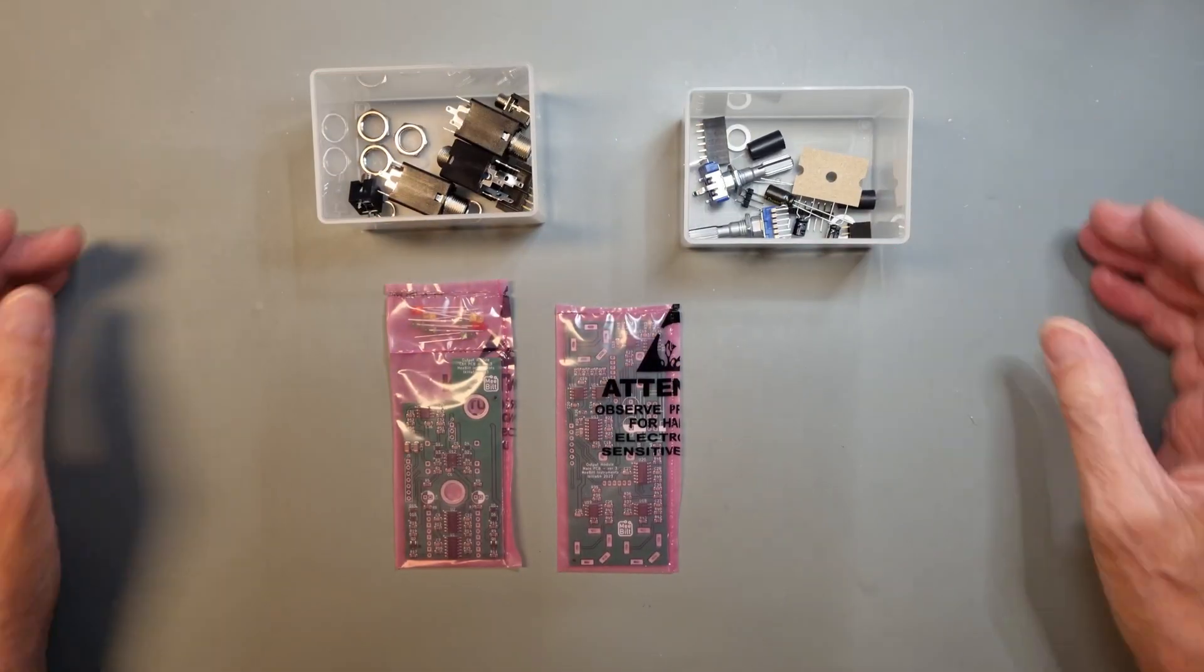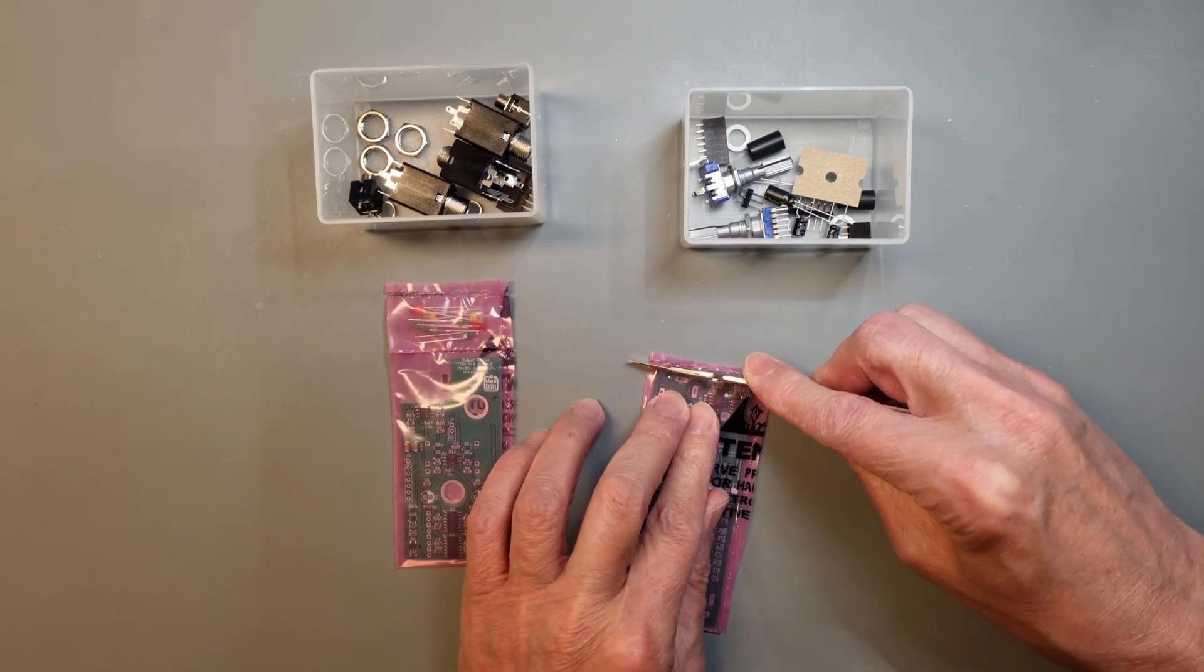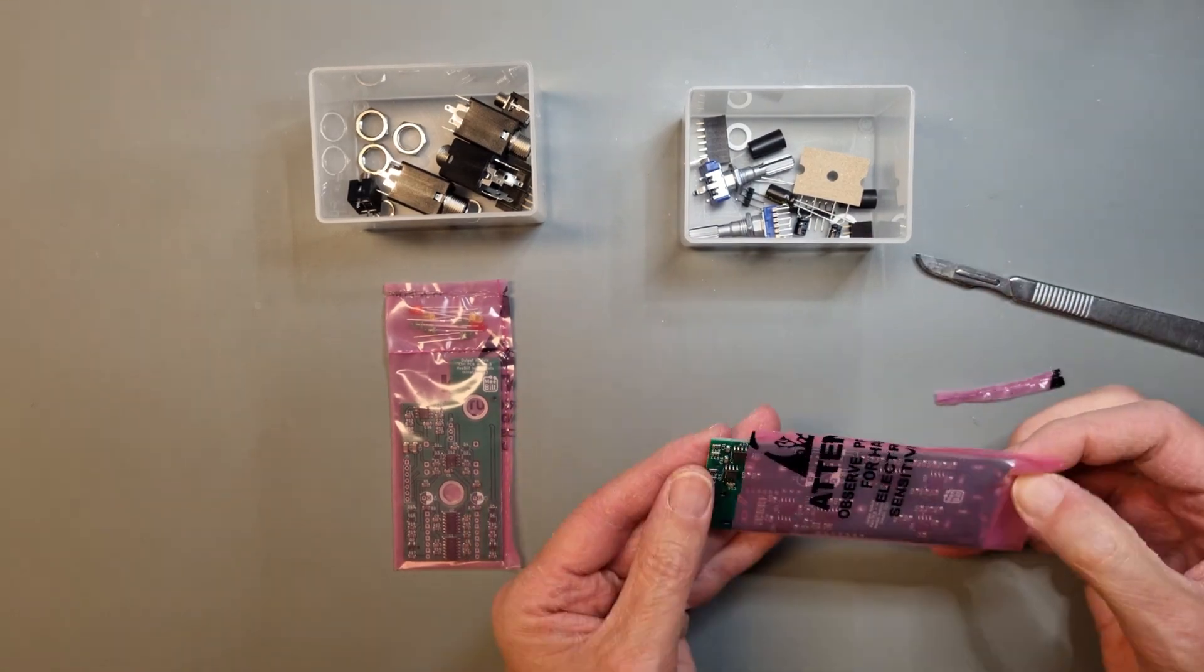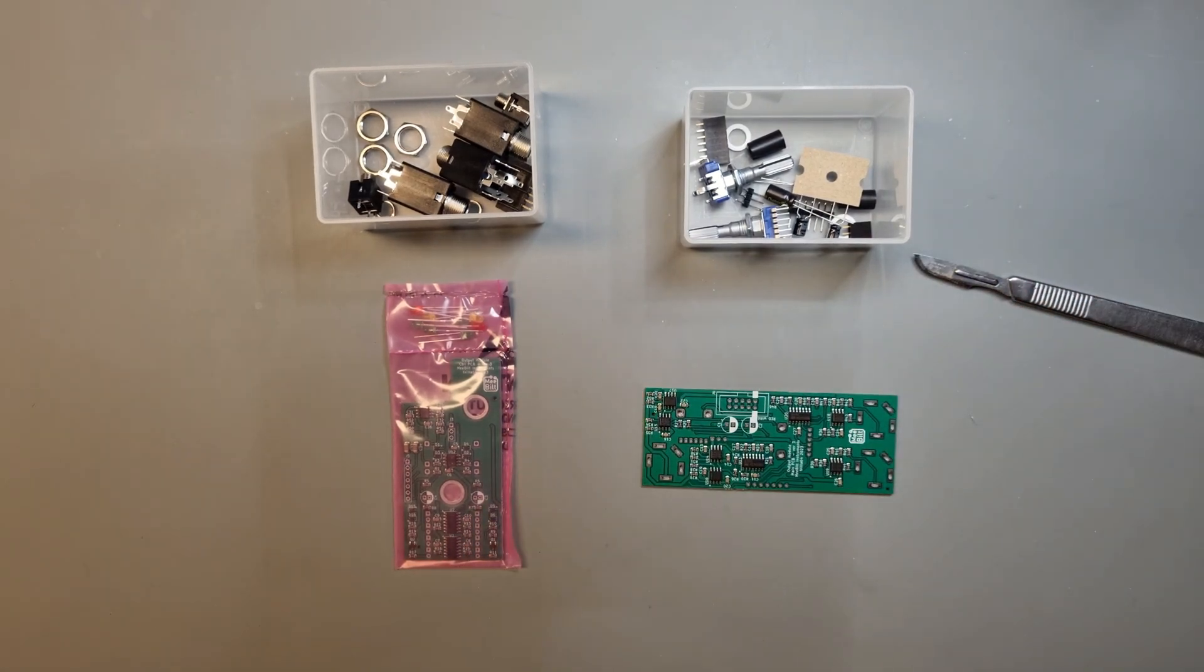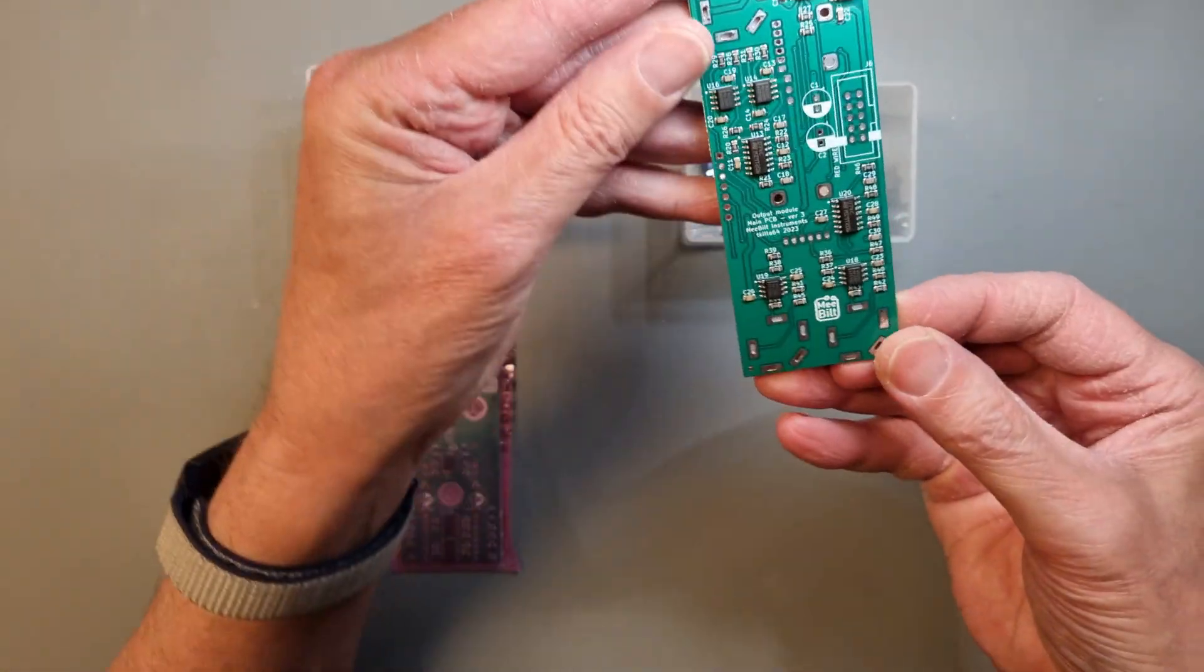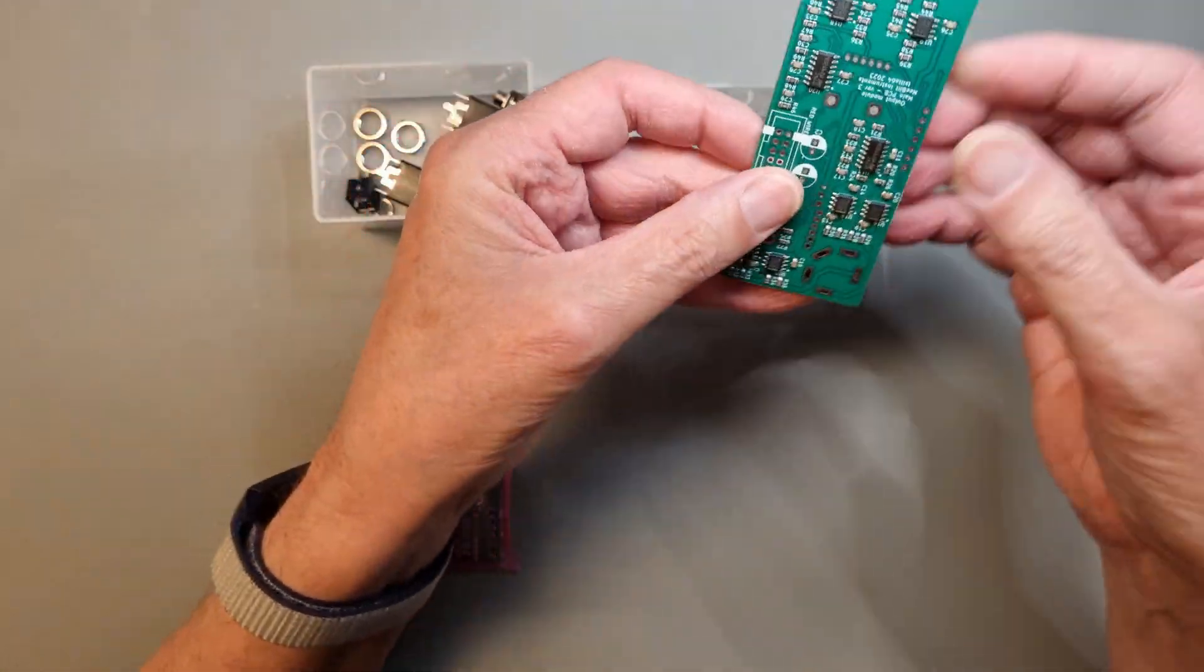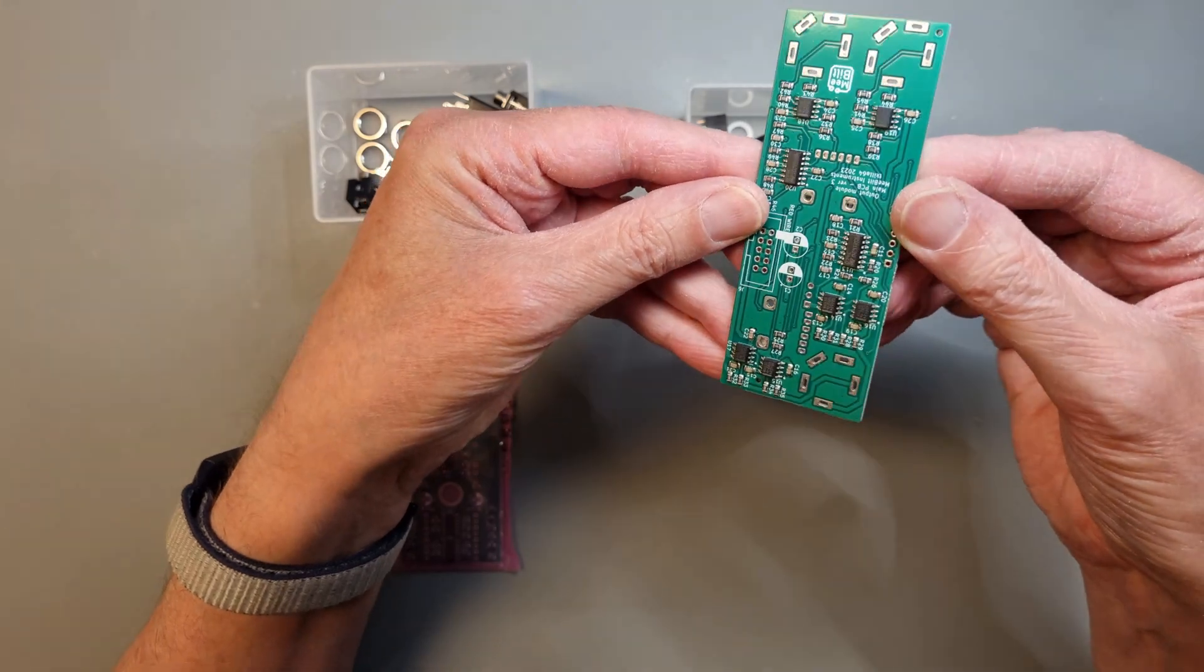The first step is to remove the ESD protection from the main PCB. We are going to mount the power connector and the electrolytic capacitors on the component side of the PCB.